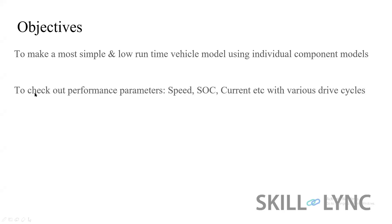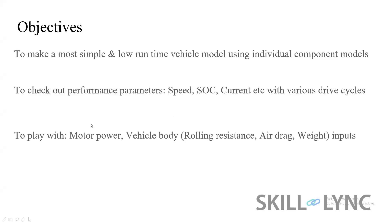The next objective is to check the performance parameters. We are going to check what the speed of the vehicle is, how much the state of charge is at the end of runtime, and how much current was taken from the battery with various drive cycles. Drive cycles are nothing but speed versus time data, which will be given as an input to the vehicle. We can also play with the motor power, the battery capacity, and vehicle body parameters like rolling resistance, air drag, and weight, then see the model output again.